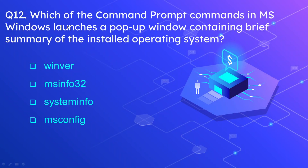Question 12: Which command prompt command in Microsoft Windows launches a pop-up window containing a brief summary of the installed operating system? The options are winver, winver run, msinfo32, system info, and msconfig. The correct answer is winver. This command gives you the version and summary of the operating system installed on your computer.